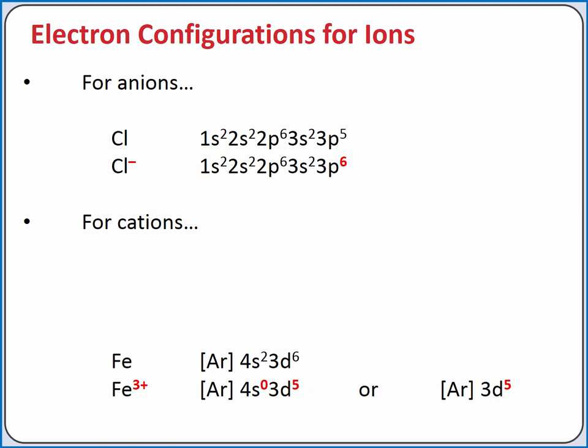because cations have fewer electrons. We remove the electrons first from the highest principal quantum number, starting with the highest energy orbitals in that shell, which is not necessarily the reverse order of filling.